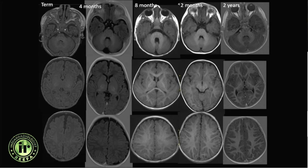By four months, myelination is seen in the anterior limbs of the internal capsule and in the splenium of the corpus callosum. By eight months, myelination has progressed to the subcortical white matter of the parietal and occipital regions and is also extending into the frontal lobe, progressing in a posterior-to-anterior gradient.